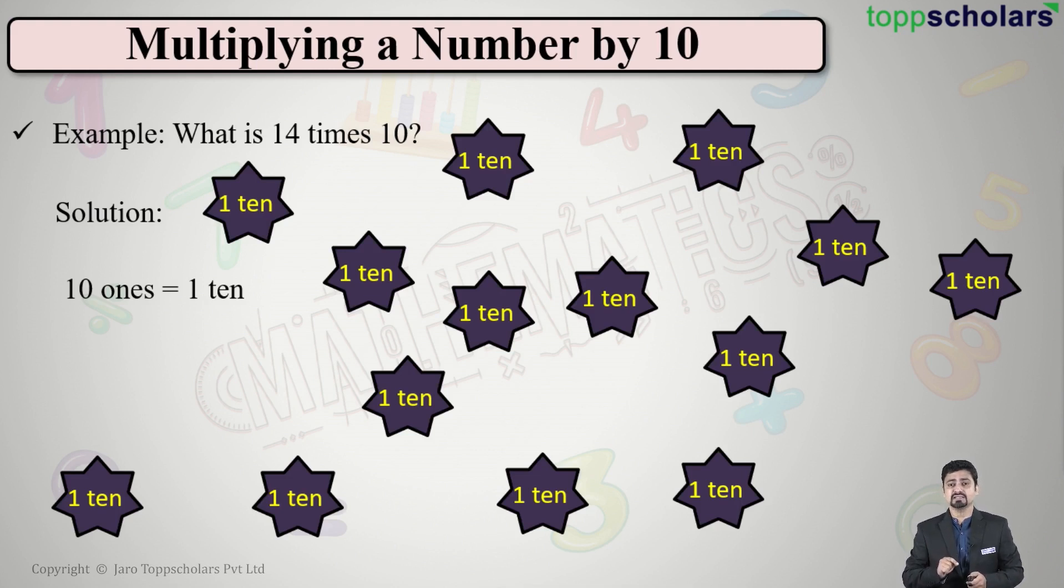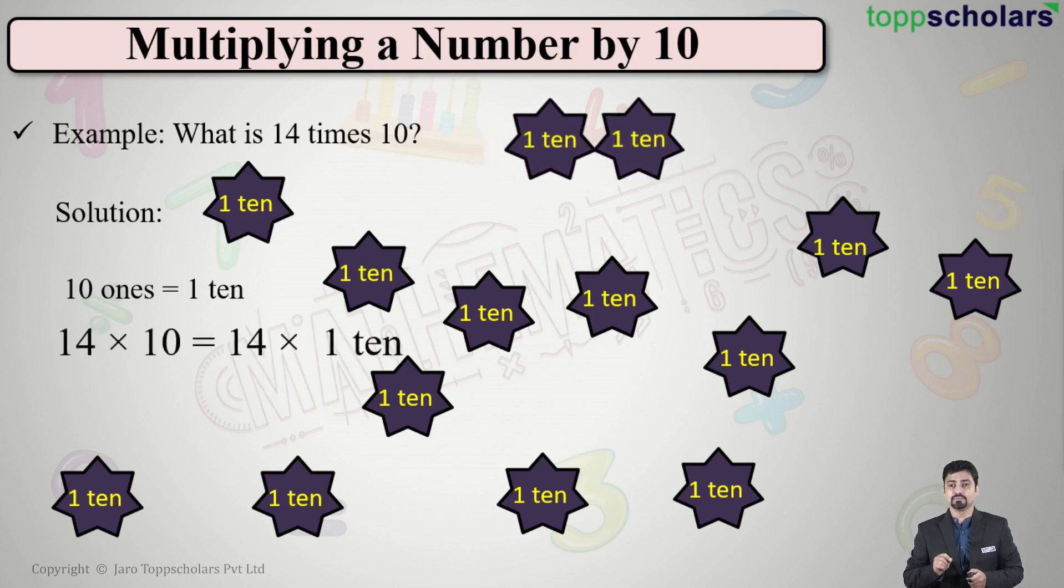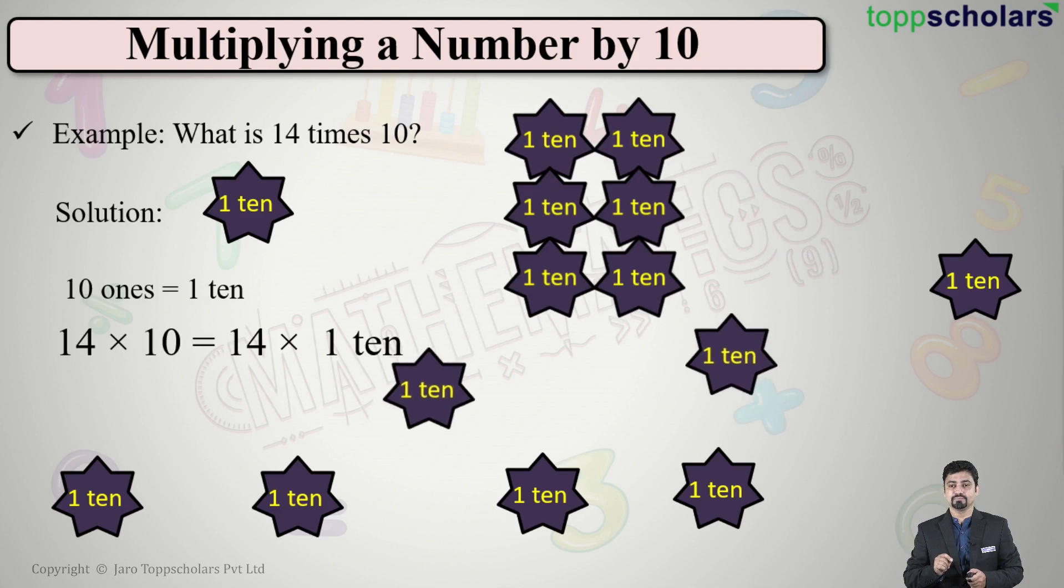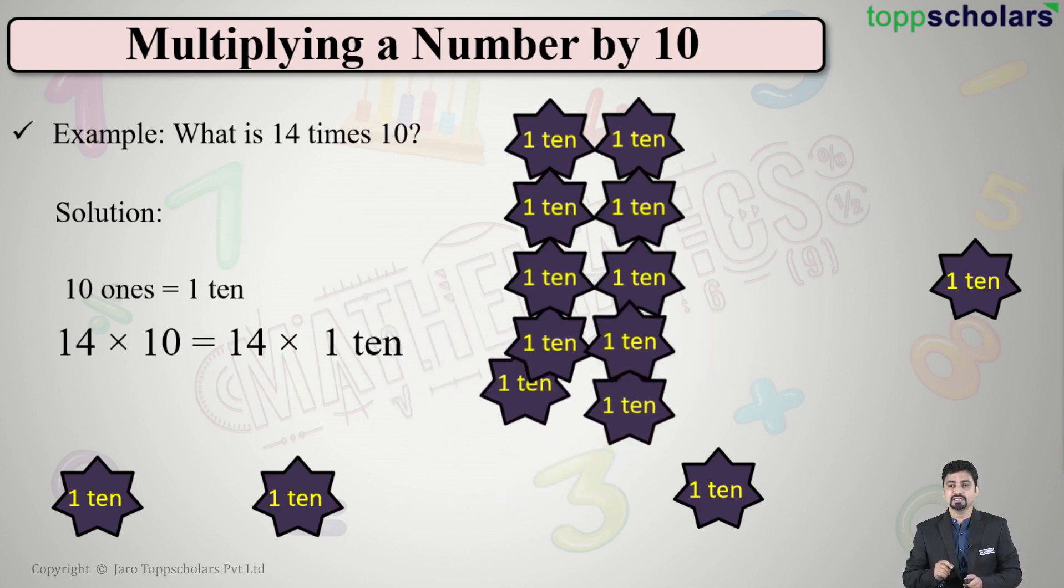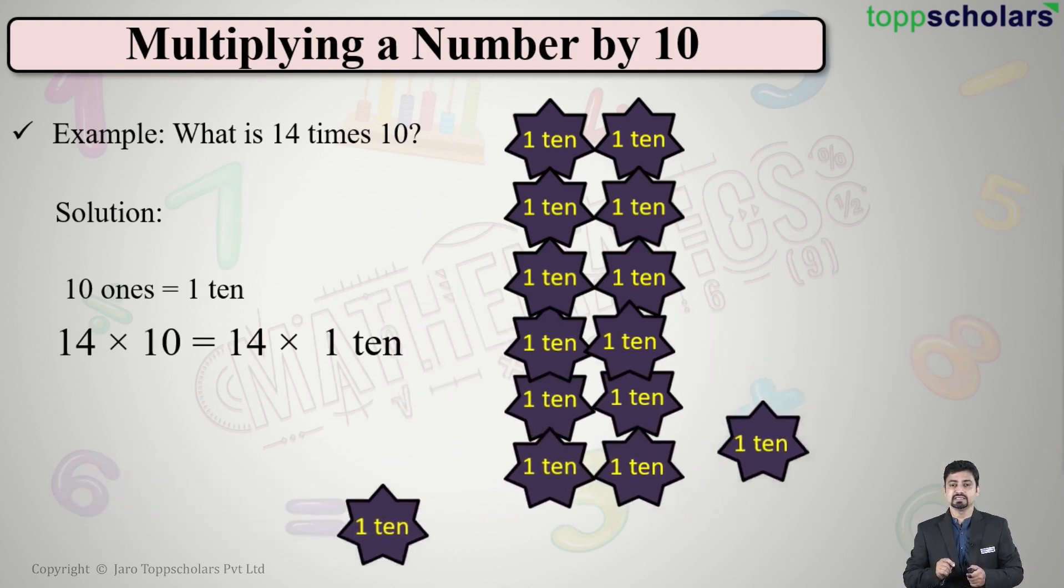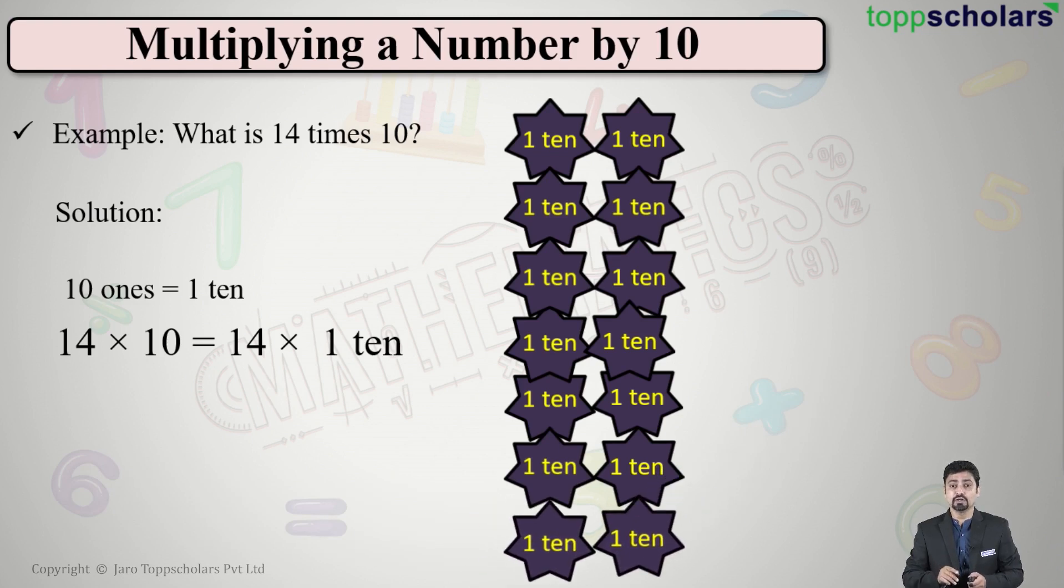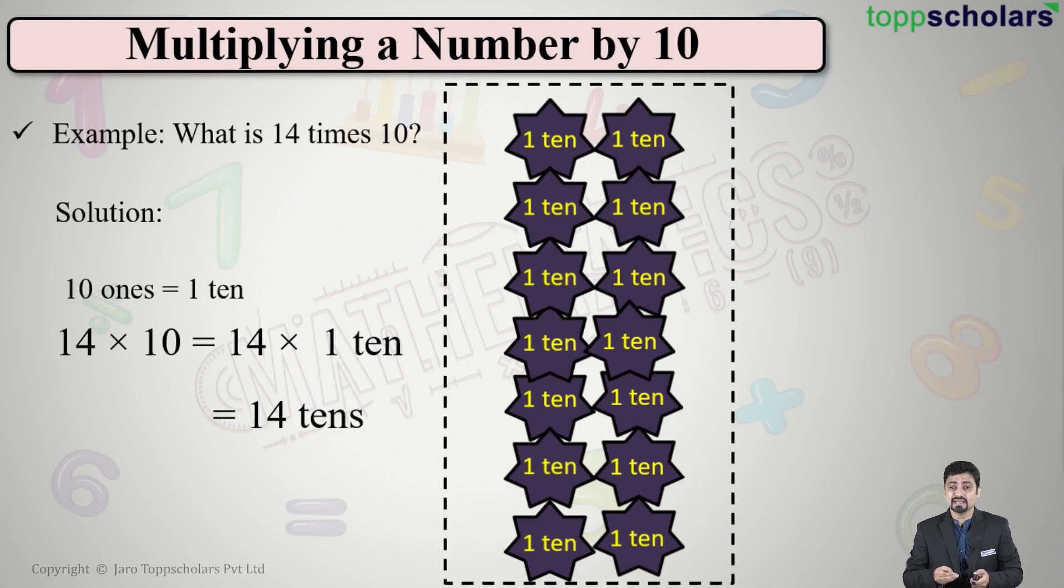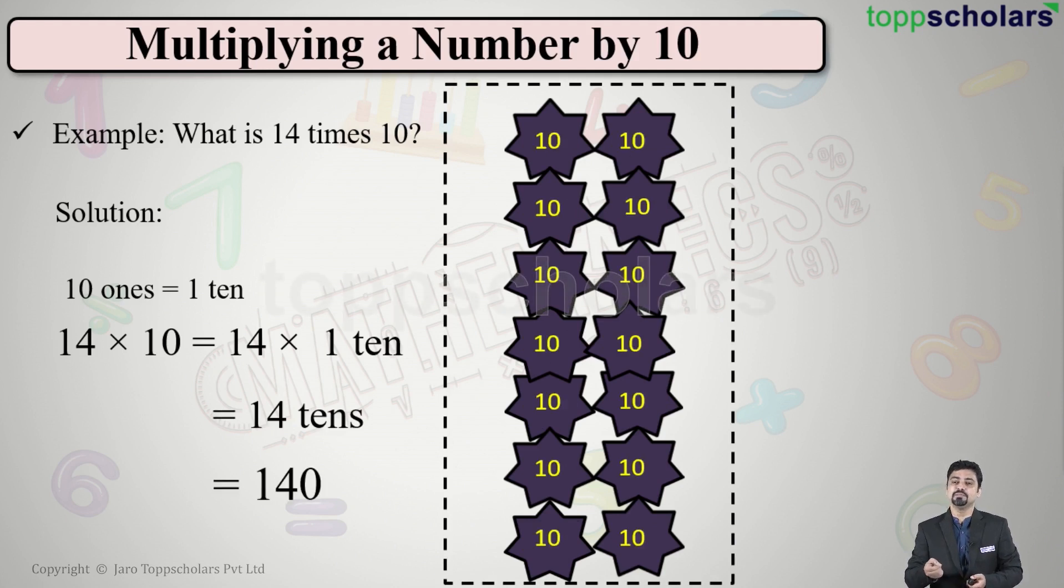How many stars do I have? If we count, I have 14 stars. Let me get these stars together. How many stars? 14. But each is a 10, so how many tens? I have 14 tens as my total answer. What is 14 tens equal to? Simply put a 0 after 14, I get my answer: 140.